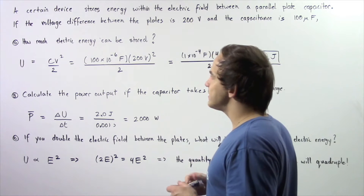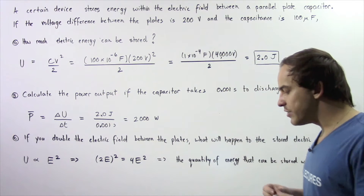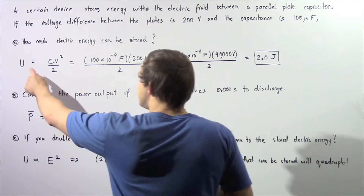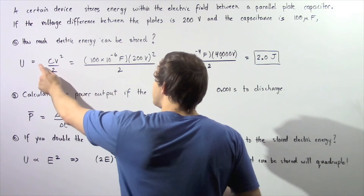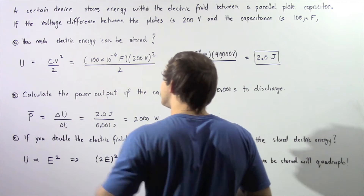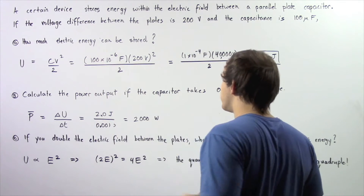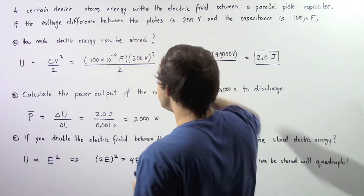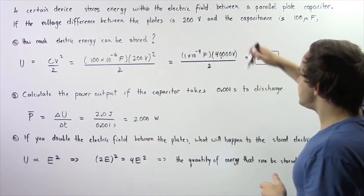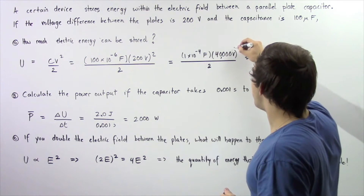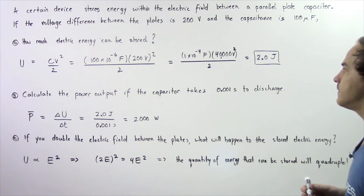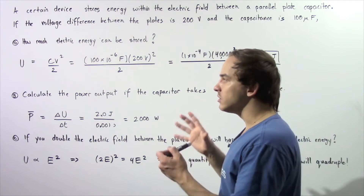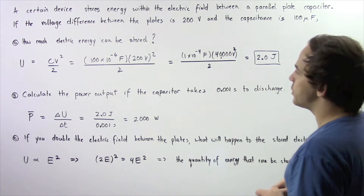How are we going to go about solving this part? Recall from a previous lecture that the stored electric energy between a parallel plate capacitor is equal to the capacitance multiplied by the square of the voltage, divided by 2. The capacitance in farads is 100 times 10 to the negative 6. The voltage is 200, so we square that and divide by 2. We get 40,000 volts squared divided by 2, multiplied by 1 times 10 to the negative 4 farads, which gives us 2 joules. So 2 joules of energy is stored within the electric field between the two parallel plates.